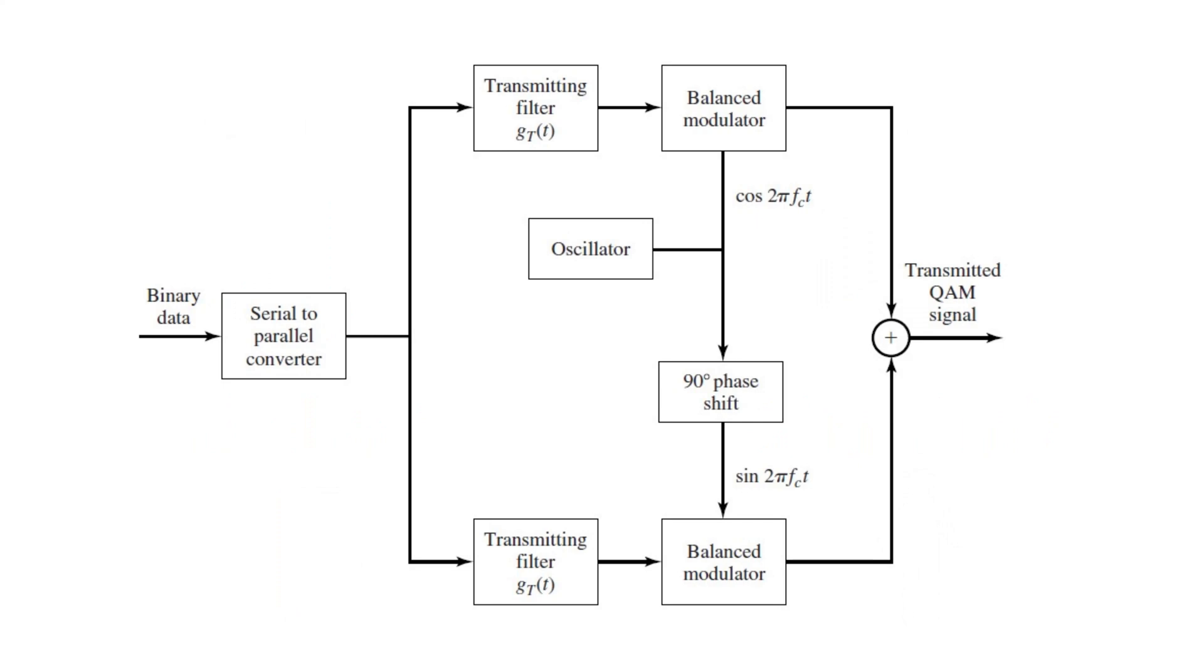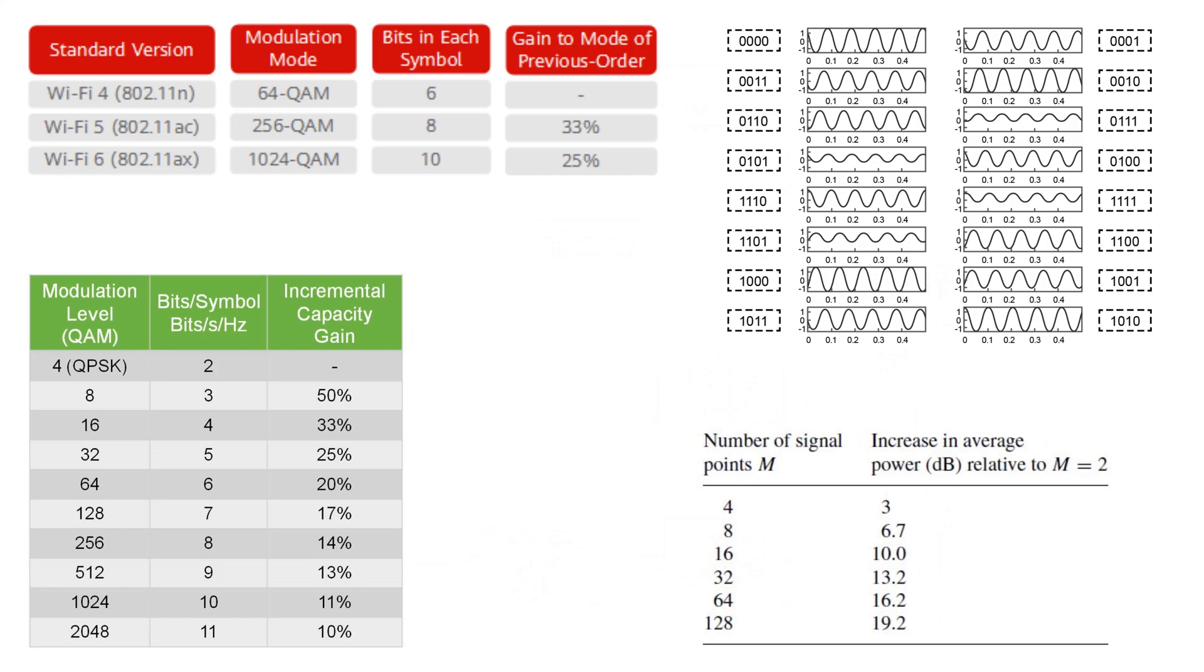QAM is a modulation technique used in communication systems where both the amplitude of two carrier signals, one in phase and one quadrature, are varied in accordance with the data signal. This allows for the transmission of more bits per symbol.